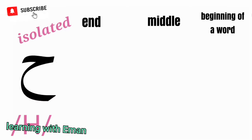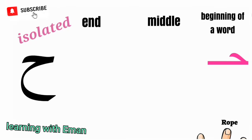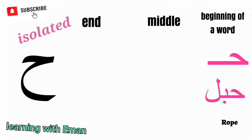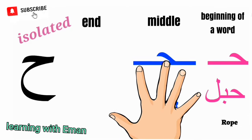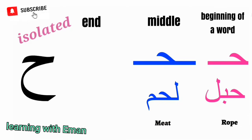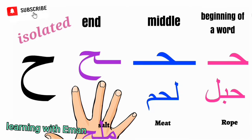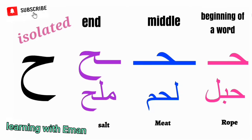Ha corresponds to the English letter H but it's much more throaty. At the beginning of a word, like in a word meaning rope. At the middle of a word, like in a word meaning meat. At the end of a word, like in a word meaning salt.